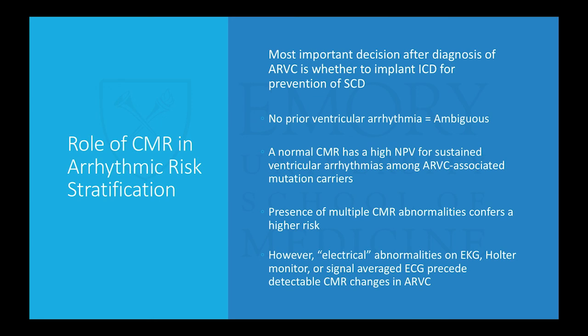For risk stratification, the most important decision after diagnosing ARVC is whether the patient needs an ICD for prevention of sudden cardiac death. For those with sustained VT, the decision is straightforward — they need an ICD. For those with no prior ventricular arrhythmia it is more ambiguous. A normal cardiac MRI has a high negative predictive value for sustained ventricular arrhythmia, even among carriers of an ARVC mutation. If there are abnormalities on CMR, that confers higher risk; however, most of the time electrical abnormalities on EKG or Holter monitoring precede any changes detectable by cardiac MRI.